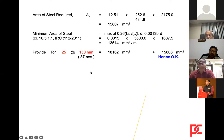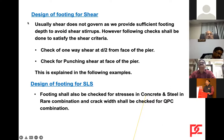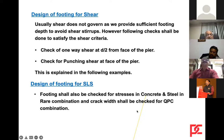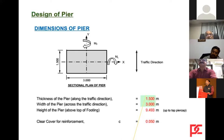The footing is also checked for shear — usually shear does not govern if sufficient footing depth is provided to avoid shear stirrups. Checks include one-way shear at D/2 from the face of the pier. For SLS, the footing is checked for concrete and steel stresses in the rare combination, and crack widths in the quasi-permanent combination per IRC 112.